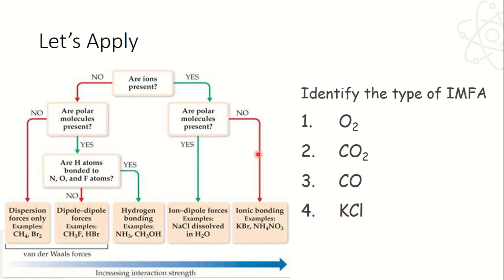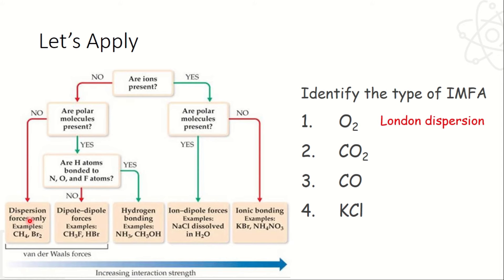Apply natin. Example, meron akong O2. Tanungin sa sarili: meron bang ion sa O2? Wala. Bakit wala? Kasi equal ang electronegativity niya — kung equal yung electronegativity nito, zero yung kanyang difference. Kung zero yung difference, that is a non-polar covalent bond. Kung non-polar covalent bond, automatic non-polar molecule yung O2. Walang ion? No. May polar molecule ba? No. So therefore, anong types of bonding niya? London dispersion. Ang ating O2 ay London dispersion.